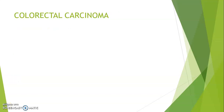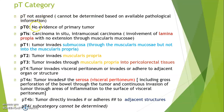Now colorectal carcinomas. PT category: PT not assigned; PT0 — no evidence of primary tumor; TIS — carcinoma in situ or intramucosal carcinoma, that is involvement of the lamina propria with no extension through muscularis mucosa. In colorectal, TIS includes involvement of lamina propria. T1 is when tumor invades submucosa through the muscularis mucosa but not into the muscularis propria.